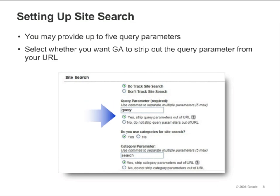Next, select whether or not you want Google Analytics to strip out the query parameter from your URL. Stripping out the query parameter has the same effect as excluding URL query parameters in your main website profile settings. If you choose to strip the query parameters in your site search settings, you don't have to exclude them again from your main settings. Note that Google Analytics will only strip out the query parameters you listed, and not any other parameters in the same URL.